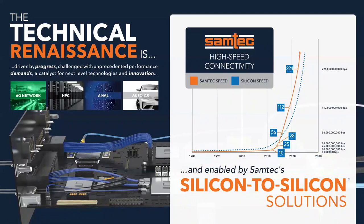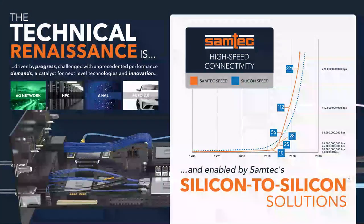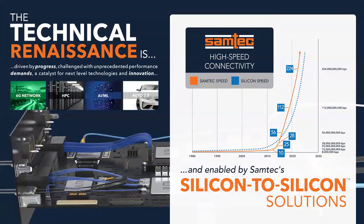What really enabled that pivot was coming out of the tech downturn at the beginning of this millennium. We started to see a trend where the speeds of interconnects were no longer following the speeds of semiconductors, but there was a pivot point where interconnect companies, Samtec included, started leading the semiconductor industry in performance. That's really been enabled by what we call the technical renaissance. We see a number of catalysts for change: 5G, 6G networks, high-performance computing, the pivot within AI/ML over the last couple of years — especially with ChatGPT, that's awakened the public's awareness of where AI is going — and automotive 2.0 with electrification, not only with EVs, but also with the increase in semiconductor content within automobiles.